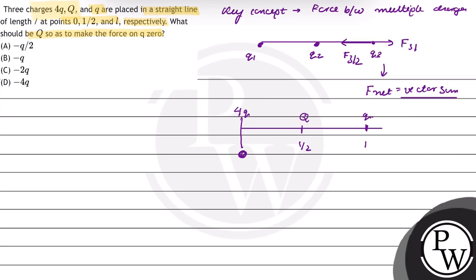We have to find the value of capital Q so as to make the force on small q zero. Now considering that 4Q and capital Q are positive charges, their force direction will be in this direction.